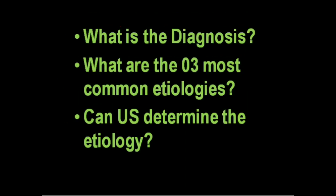Shadowing seen on the left kidney image indicates more calcification, and therefore it is an advanced case of nephrocalcinosis. What is the diagnosis? What are the three most common etiologies? And also, can ultrasound determine the etiology?